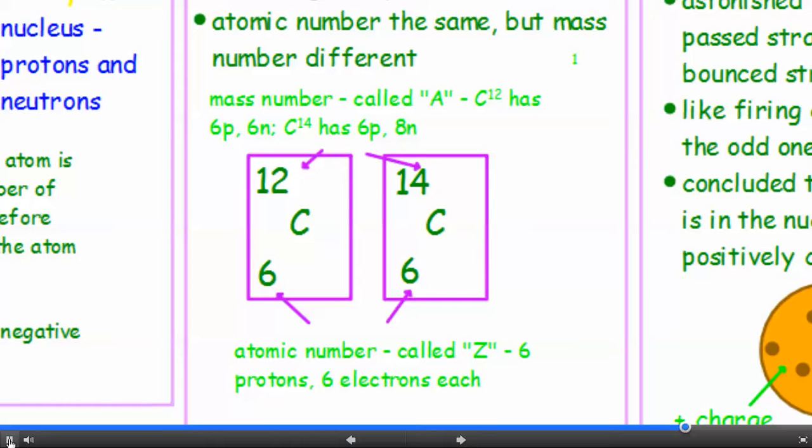But carbon-14 has six protons, that's the same, but two extra neutrons, eight neutrons. So it's got a mass of 14. Now the atomic number, which is called Z, this doesn't change, because both forms have six protons and six electrons.